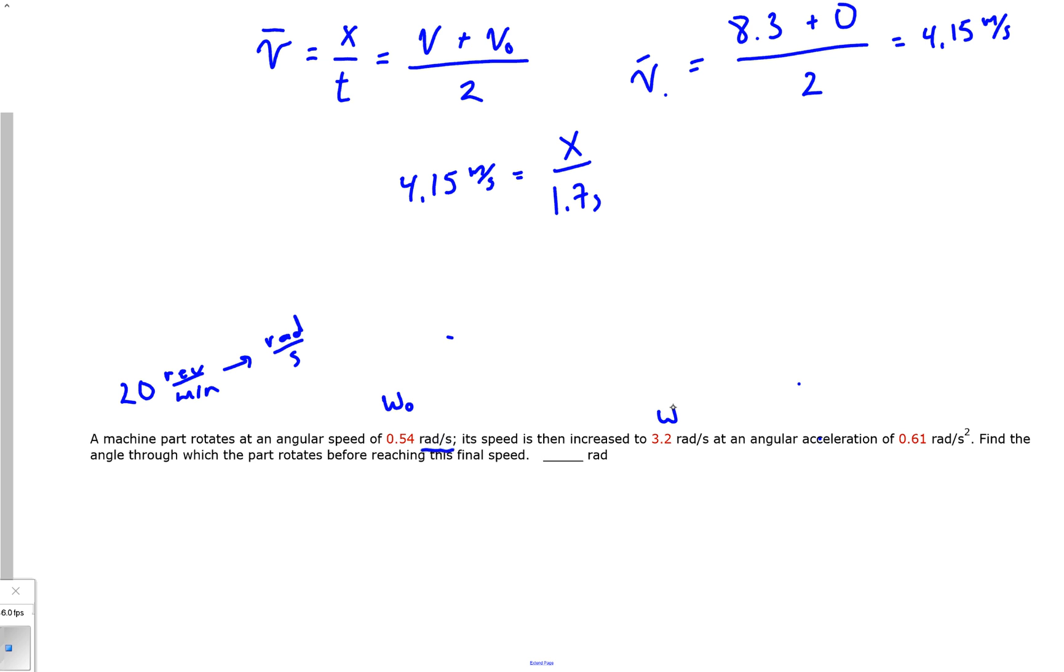Now it says its speed is then increased to 3.2 rads per second, so that is a final angular velocity. And it says at an angular acceleration, notice angular acceleration, so this is not a linear acceleration but we'll use the Greek alpha. It's actually given us. Find the angle, and it just says angle, but this is saying the angular displacement.